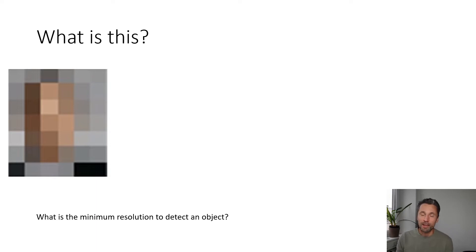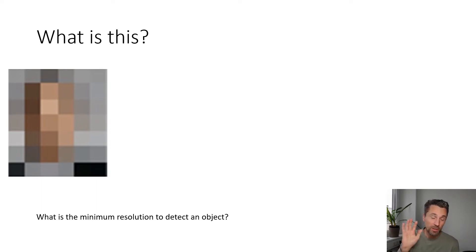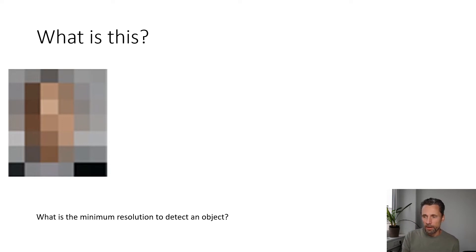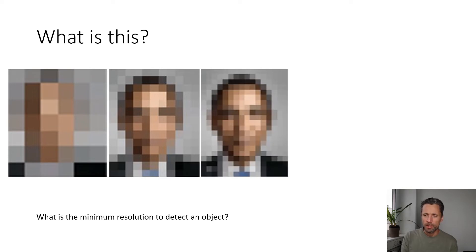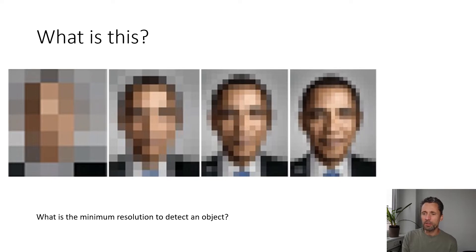Let's start by asking how much resolution do we actually need to detect that a certain sample is either a car or a non-car. So let me ask you what is this — and let's increase the resolution. Do you now see what that is? I'm going to increase that even more, and I think that should be obvious right now. You might even be able to say not just what it is but also who that is.